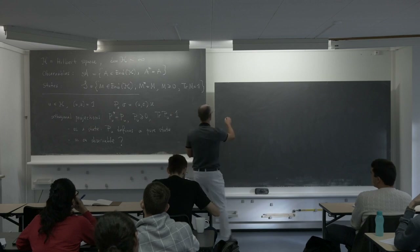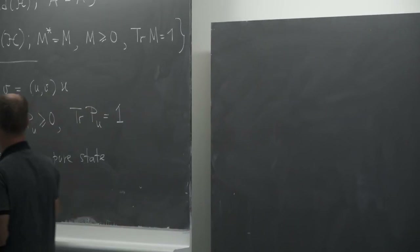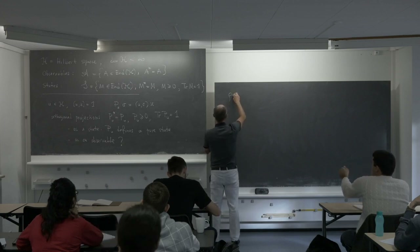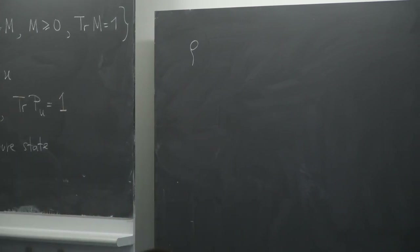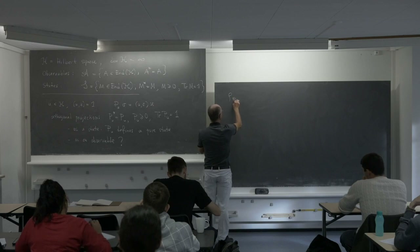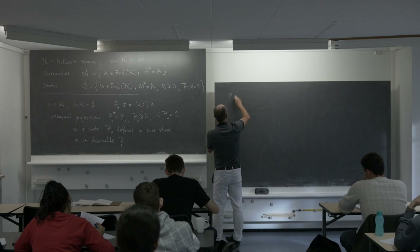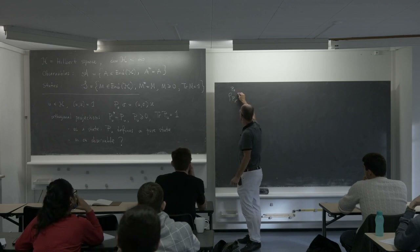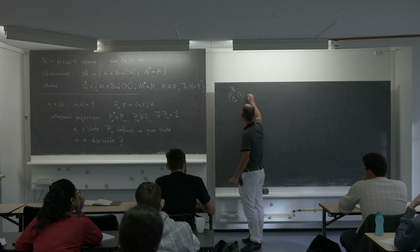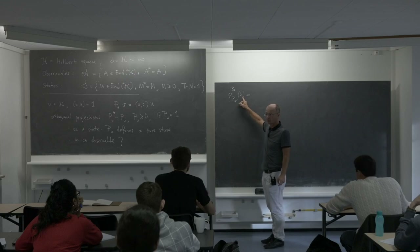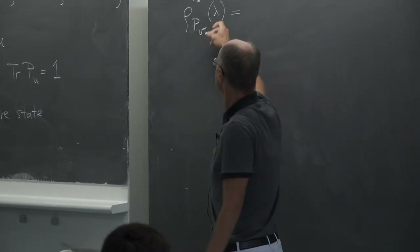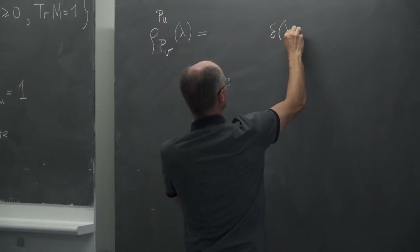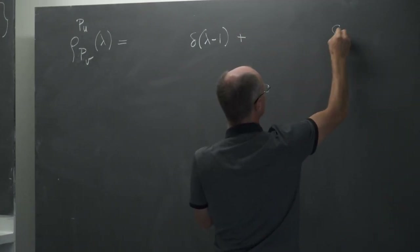We can associate to the observable P_u a probability density. The probability density will be a linear combination of delta functions corresponding to eigenvalues. The eigenvalues of this projection are 1 and 0, so we get a delta of (λ − 1) plus a coefficient times delta of λ — that is, 0 and 1, and we can measure one of those.